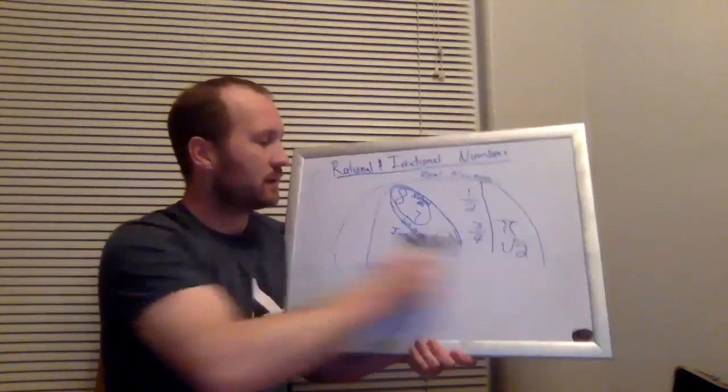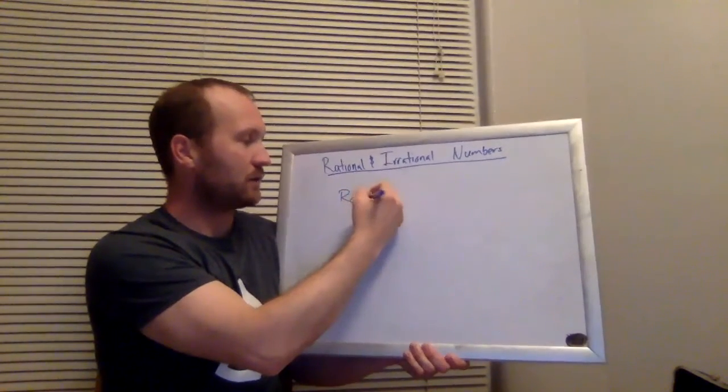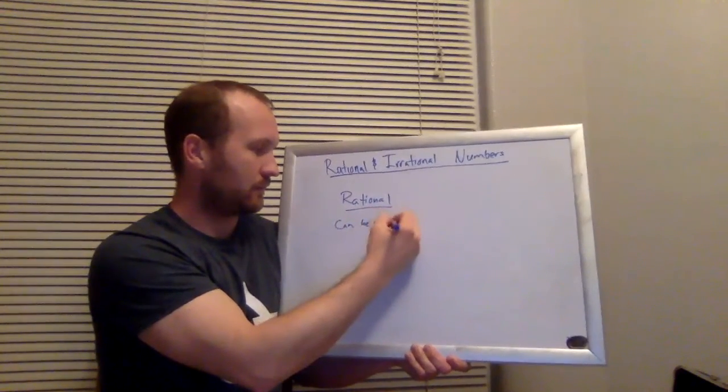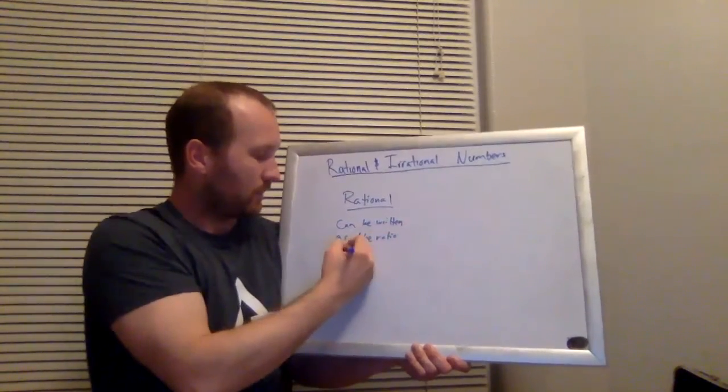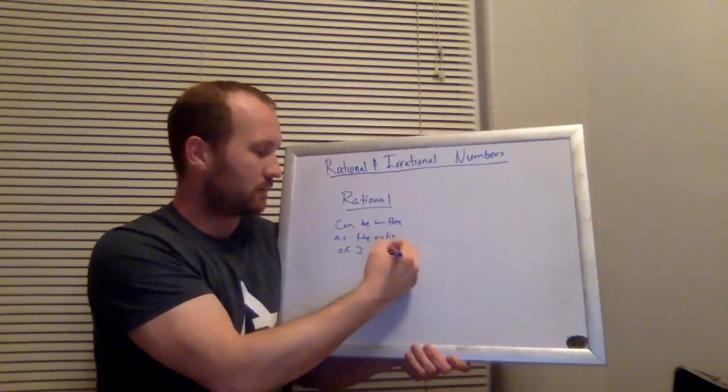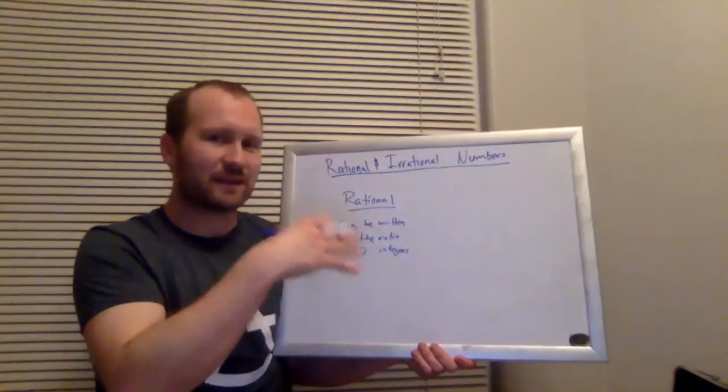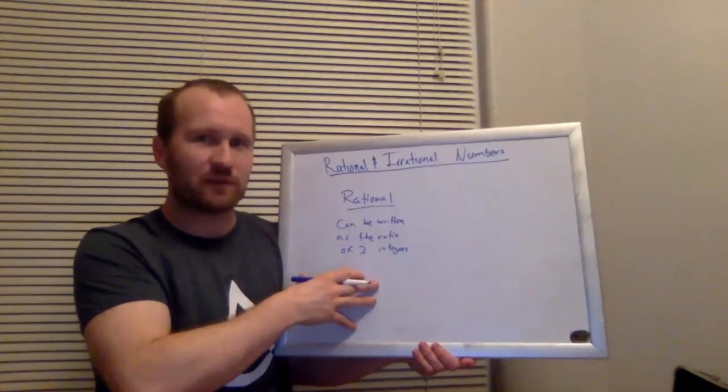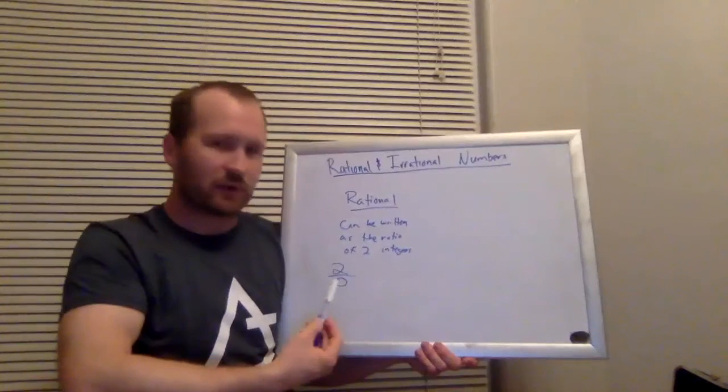And that pretty much divides up our real number system. Now, there are a couple other ways that we can look at the difference, specifically, between rational and irrational. A rational number can be written as a ratio of two integers. Okay, now I don't want to get too much into the technical definition here, because there's one specific ratio that's not really allowed, right, which is if we were to divide by zero.